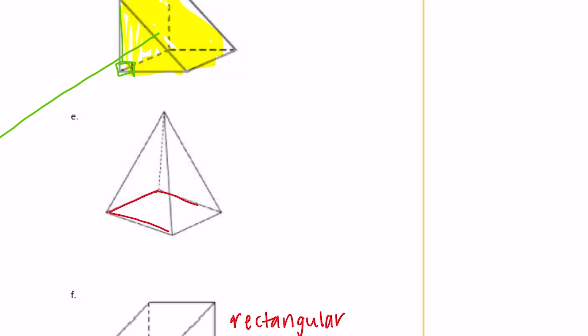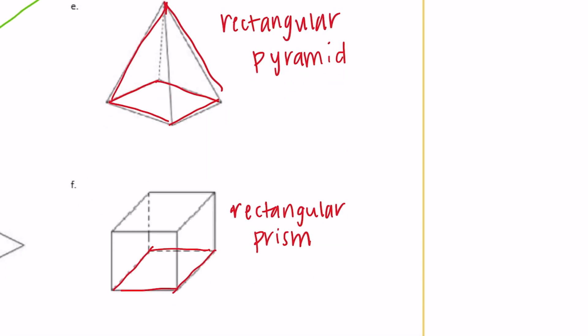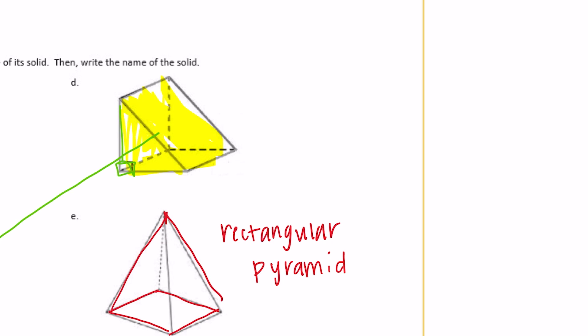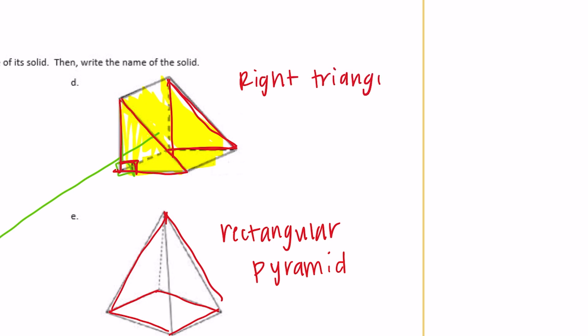We're going to classify E by the base. The base looks like it could be a square or a rectangle, so we'll say rectangular. And is it a pyramid or a prism? It is a pyramid — a rectangular pyramid. You can see the difference: the pyramid comes to a point at the top, while the prism has two bases that are both rectangles. And then this last one — the bases are actually the triangular faces. It has two triangular bases, so it's a prism. More specifically, since it's a right triangle, we call it a right triangular prism.